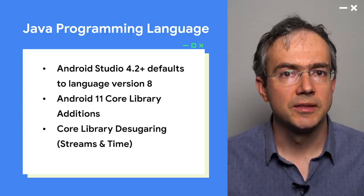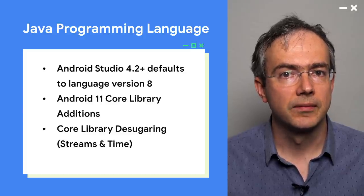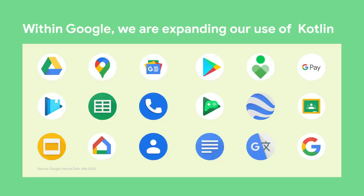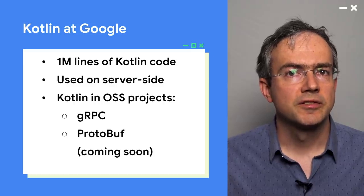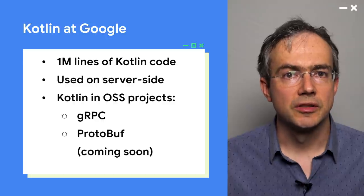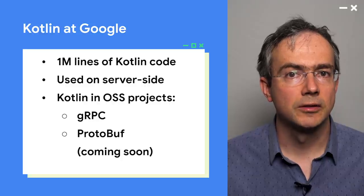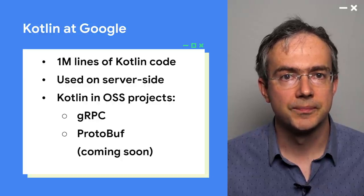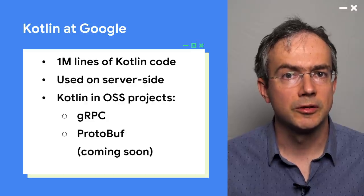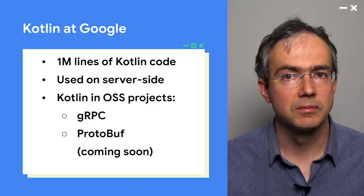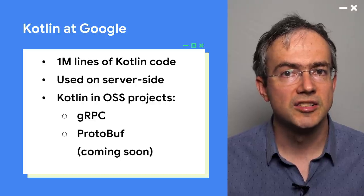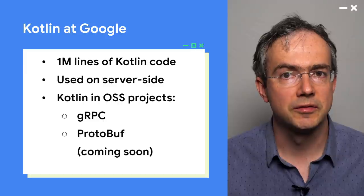This library-desugaring functionality was built in close partnership with Google's internal tooling team. Within Google, we're also doubling down on Kotlin. Over 55 of our apps are now using Kotlin, and our large internal codebase counts over a million lines of Kotlin code. We've recently started using Kotlin for server-side code as well. As part of building Kotlin support for our internal codebase, we've added Kotlin support to core libraries such as gRPC and protobuf. The gRPC work has recently been open-sourced, and protobuf will follow soon.